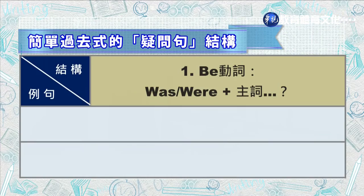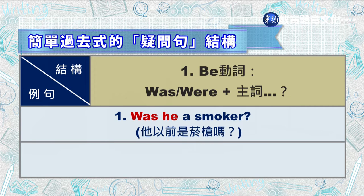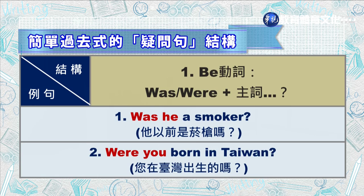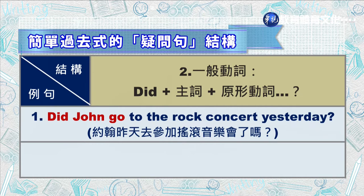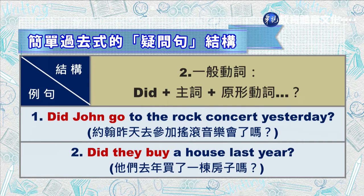学完否定句结构之后，我们来学习简单过去式的疑问句结构。第一，be 动词的情况是 was 或 were 加主词。例句一：Was he a smoker？他以前是个烟枪吗？例句二：Were you born in Taiwan？您在台湾出生的吗？第二种情况是一般动词，句型是 did 加主词加原型动词。例句一：Did John go to the rock concert yesterday？约翰昨天去参加摇滚音乐会了吗？例句二：Did they buy a house last year？他们去年买了一栋房子吗？以上就是简单过去式的所有文法要点。